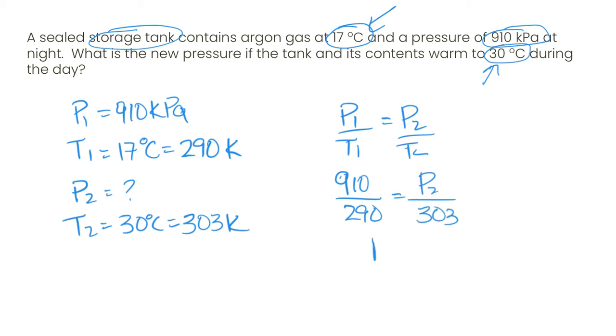Okay, solving for P2 then gives us 951 kPa. And we can double check our answer because we know this is a direct relationship and the temperature is increasing.